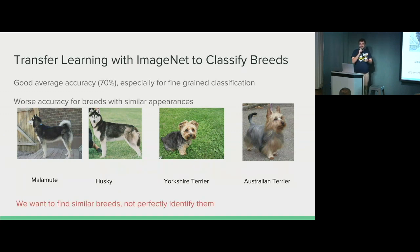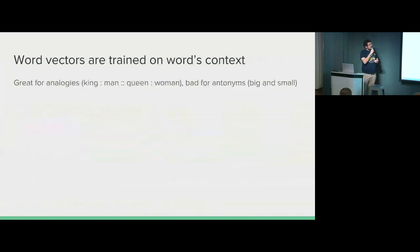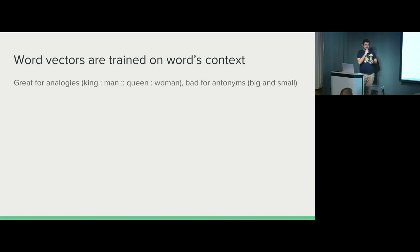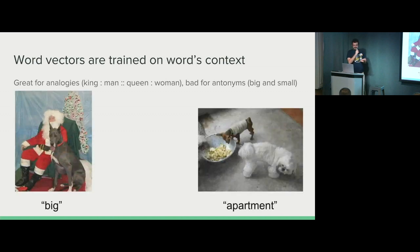The thing about this is that we want to find similar breeds, not necessarily perfectly identify them. So if in the top three we happen to get the breed that matches, the person might not even know what breed it is anyway. I also use word vectors based on the user's text input to find the temperament and different characteristics of the dog. Word vectors are great for analogies — the most famous case being king is to man as queen is to woman, which both GloVe and Word2Vec pick up on really well. But they're really bad for antonyms, because they're trained on the context the word appears in. For example, big and small often appear in the same context, so it thinks they're very similar, even though they have very different meanings when it comes to dogs — a Great Dane is a lot different than a Shih Tzu or a Chihuahua.